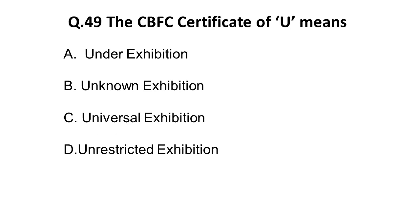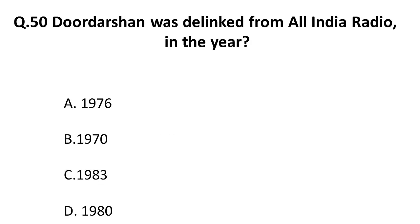Question 49: The CBFC — Central Board of Film Certification — U certificate means — options include Unknown Exhibition, Universal Exhibition, and Unrestricted Exhibition. The correct answer is: CBFC U certificate means Unrestricted Exhibition.